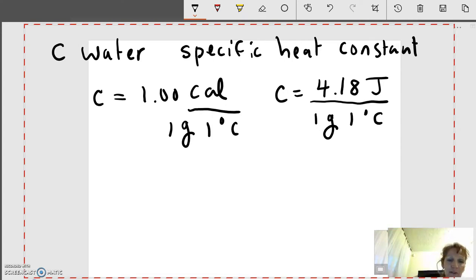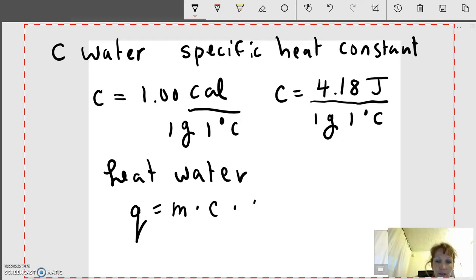When do you use that? When the problem says you want to heat water and you use your Q equation. Q equals the mass of the water times C of the water times the change in temperature, delta T.